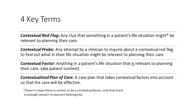I put an asterisk after the word 'might' for contextual red flag. The point here is that a contextual red flag doesn't necessarily lead to the discovery of a contextual factor. It's just a clue — a sign that there might be something going on in that person's life, and it's a sufficient enough clue that it warrants contextual probing.